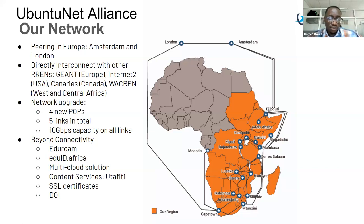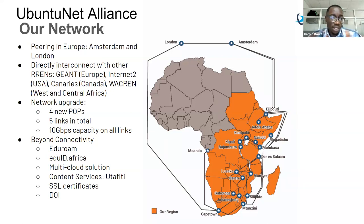The network upgrade will see the introduction of four new points of presence: one in Djibouti, one in Botswana, one in Johannesburg, and one in Lusaka. We have five links in total on the network, and every link carries a capacity of 10 GB per second.